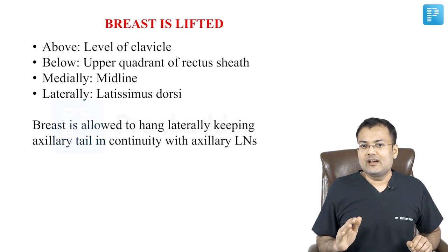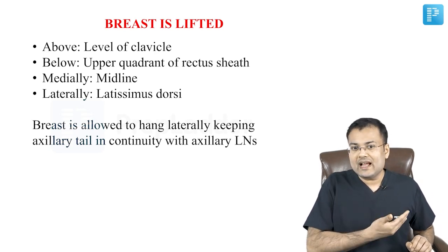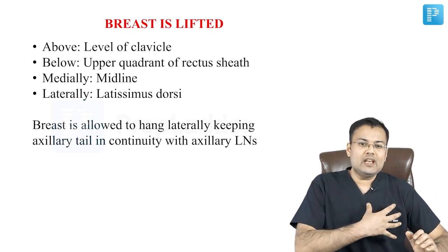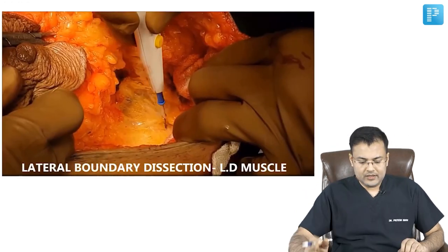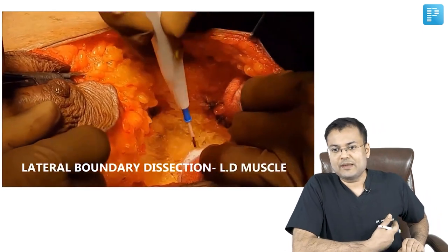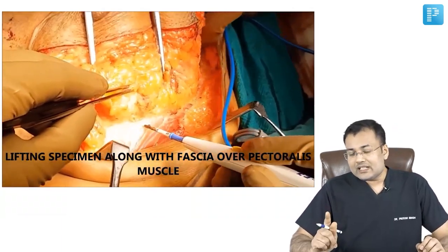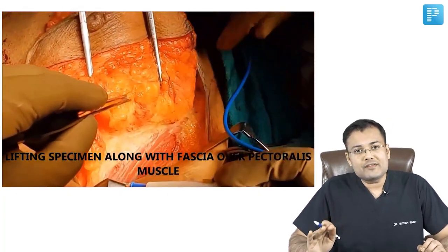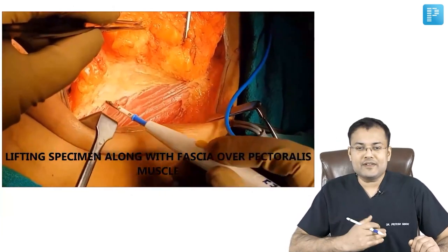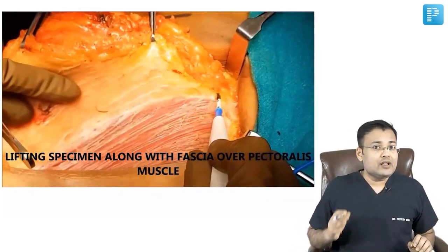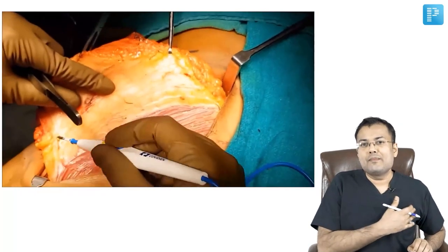Once the breast is lifted, you allow it to hang laterally, keeping the axillary tail in continuity with the axillary lymph node. The lateral boundary of dissection is the latissimus dorsi muscle. The cleavage plane is located between the fascia and pectoralis major, and in this video the surgeon is removing the fascia also. So the specimen is being removed along with the fascia of pectoralis major.